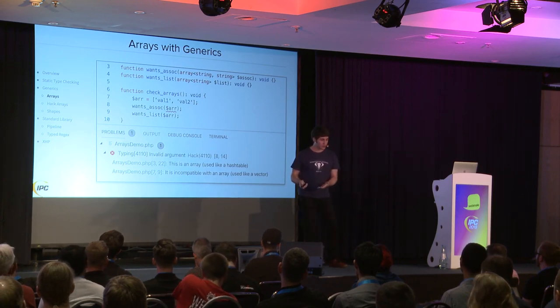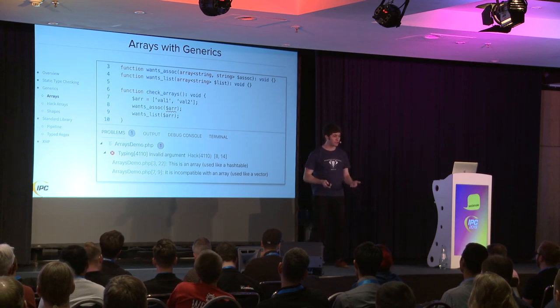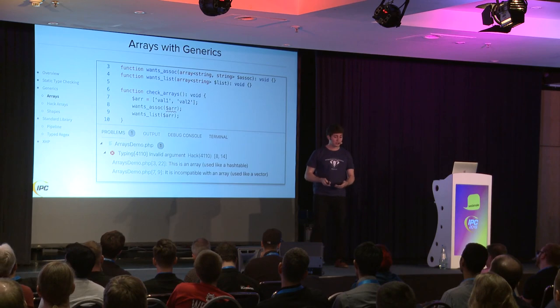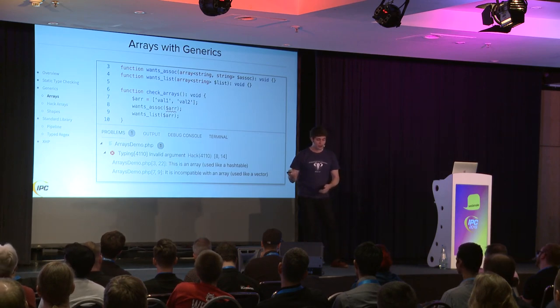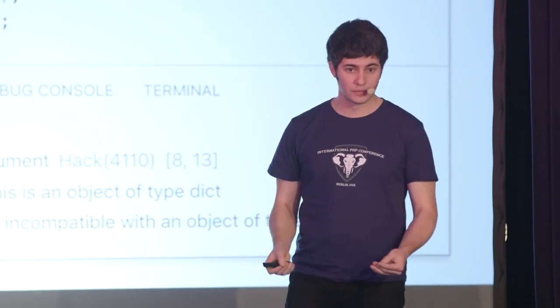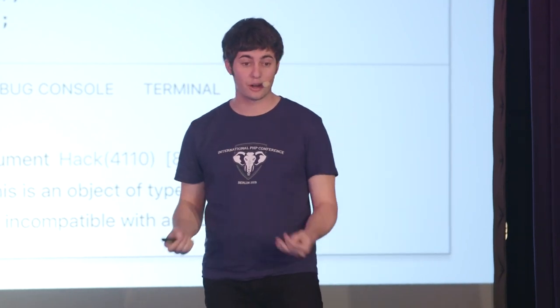What other languages do is throw an exception if you try to access a key that's not there. Hack didn't want to make that change to arrays because it would be backwards-incompatible behavior, so instead they made new data structures: the dict and the vec. They're a lot like the associative array and list-like array, but they formalize the difference and are stricter about data types. If you try to access a key that doesn't exist, it throws an exception — which means if you get a value out, it is a string, not null. This helps make the type system more sound.